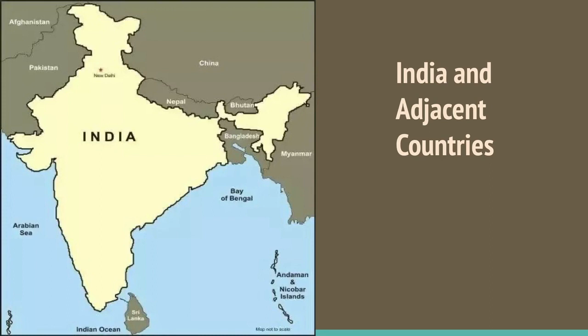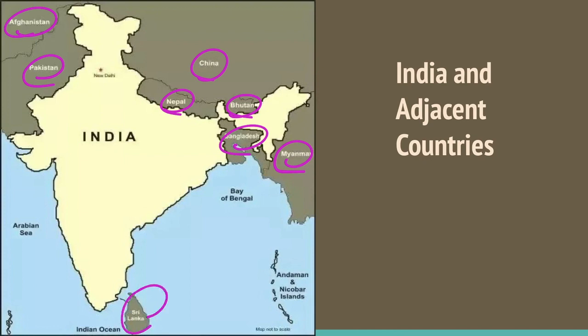India occupies an important strategic position in South Asia. India has 28 states and nine union territories. India shares its land boundaries with Pakistan and Afghanistan in the northwest, China, Nepal, and Bhutan in the north, and Myanmar and Bangladesh in the east. Our southern neighbors across the sea are two island countries: Sri Lanka and Maldives. Sri Lanka is separated from India by a narrow channel formed by the Palk Strait and the Gulf of Mannar, while the Maldives Islands are situated to the south of Lakshadweep Island.